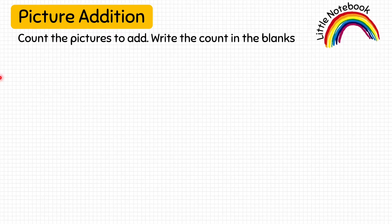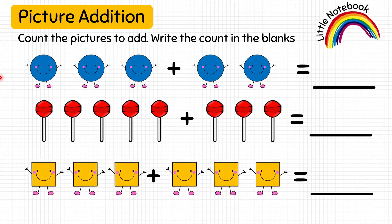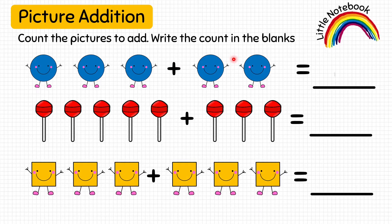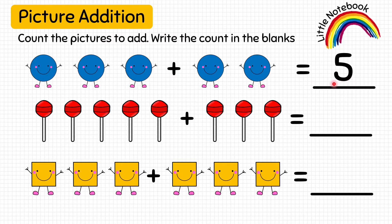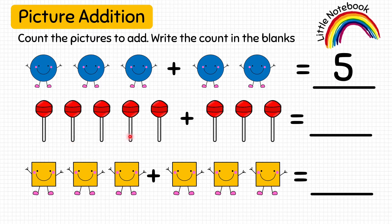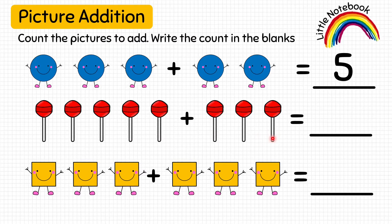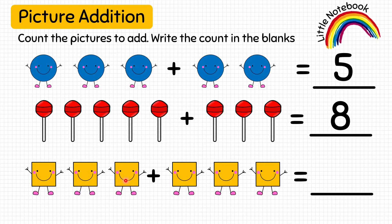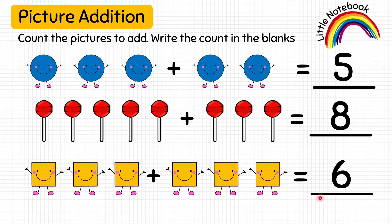Here are a few more questions. Let's count the first picture: one, two, three, four, five. Write five — so three circles plus two circles equals five circles. Now count the next picture: one, two, three, four, five, six, seven, eight. Write eight. Next: one, two, three, four, five, six. Write six — so three squares plus three squares equals six.